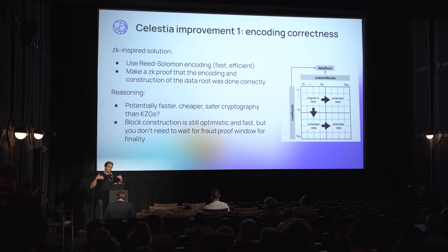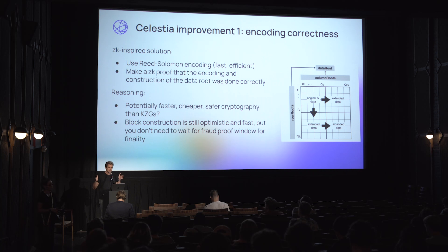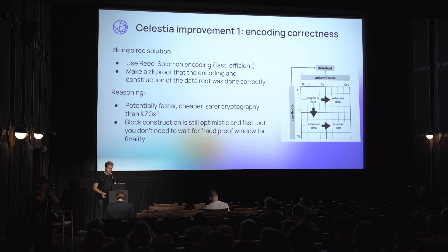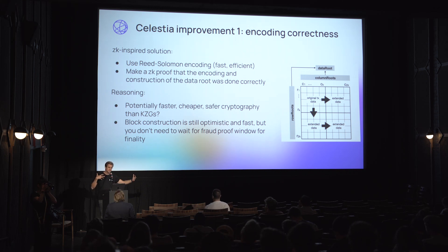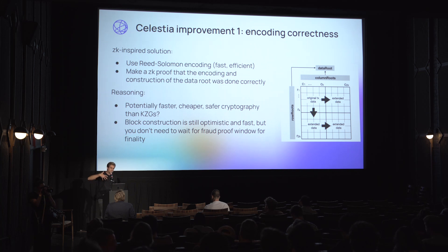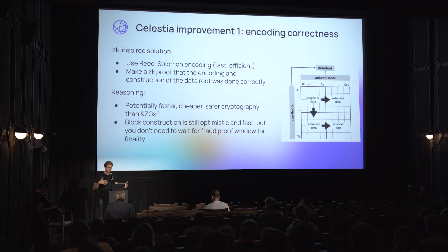In parallel, you also generate a ZK proof that, given the original transaction data, if you do the Reed-Solomon encoding and then the Merkleization, you get this specific data root — essentially proving the correctness of the encoding. It's kind of like an optimistic rollup with ZK finality: you produce a block normally, and then rather than waiting for the entire fraud proof window, you get a ZK proof that the encoding is correct, so you don't have to wait that whole time.